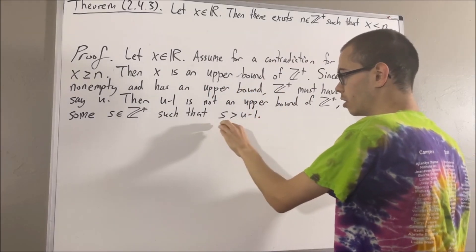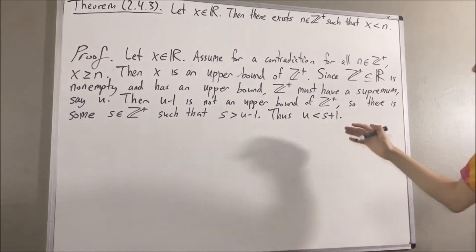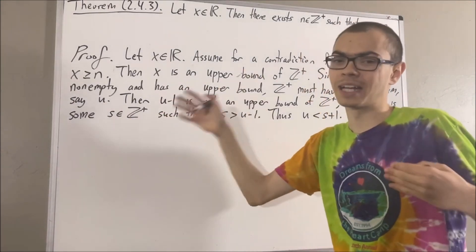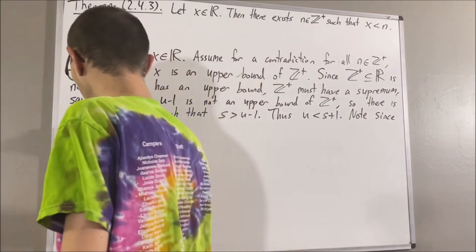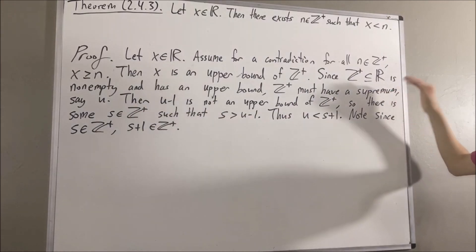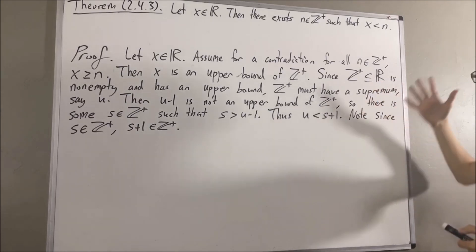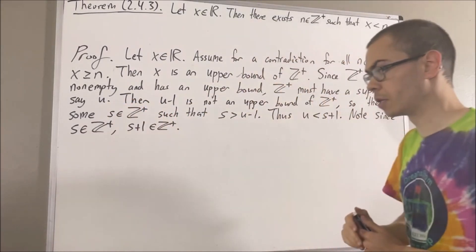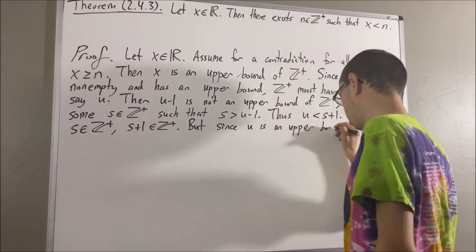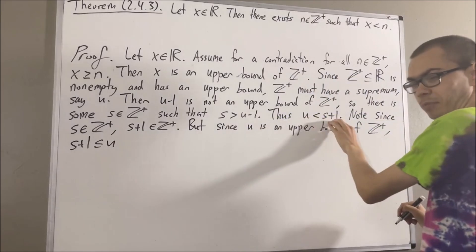But then adding 1 to both sides, we see that u is less than s plus 1. But then, since s is a positive integer, surely s plus 1 is also a positive integer. However, since u is the least upper bound of the positive integers, surely u is an upper bound of the positive integers, which means every positive integer is less than or equal to u. So, in particular, s plus 1 is less than or equal to u. But this contradicts the fact that u is less than s plus 1.